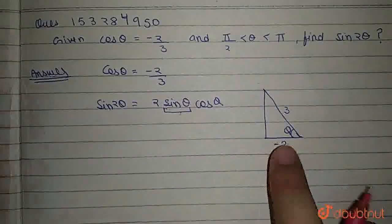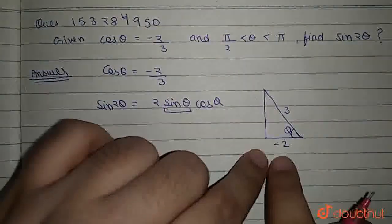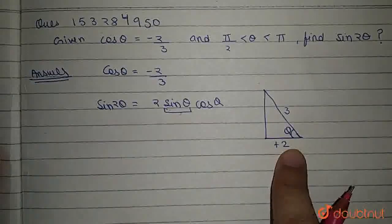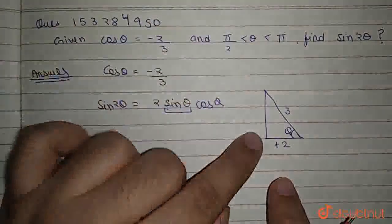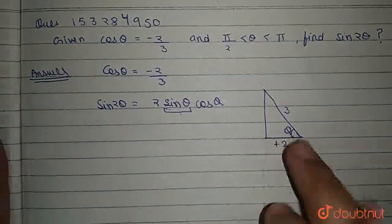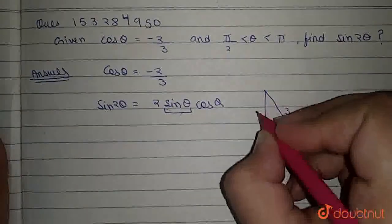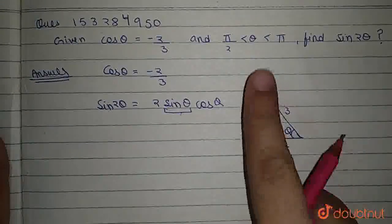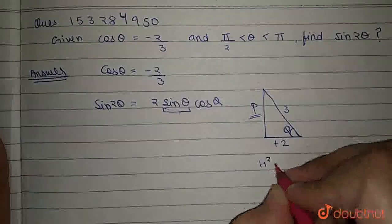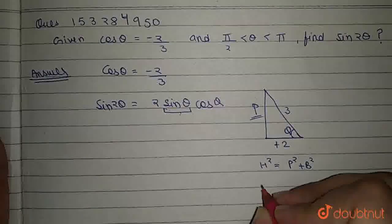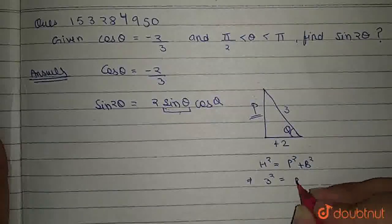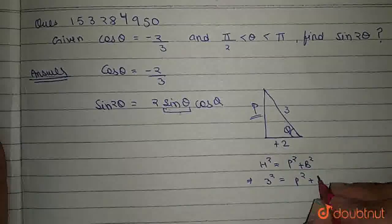But we know that the length of triangle sides is never negative. So, the hypotenuse is 3 and base is 2. By Pythagoras theorem, p² + b² = h², which gives us p² + 4 = 9.